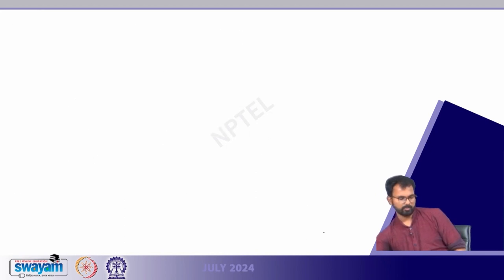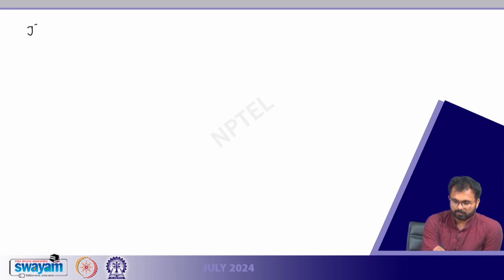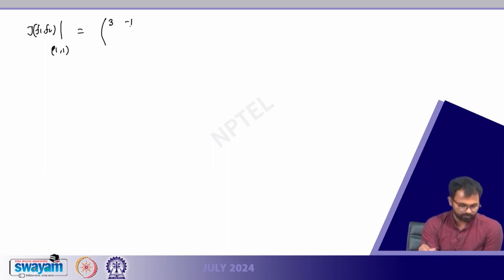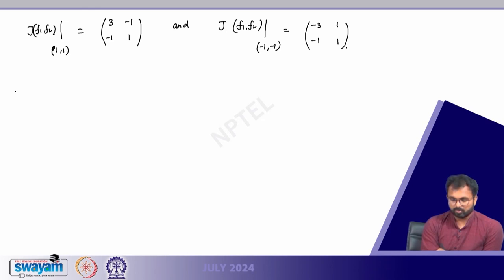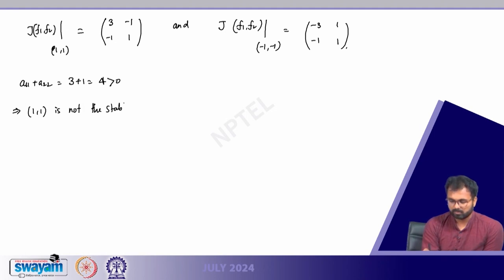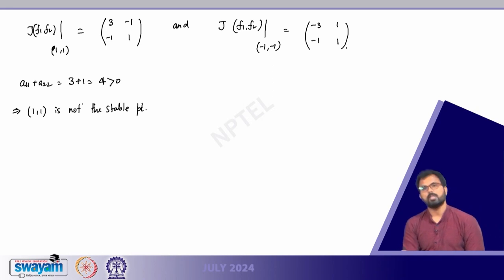For the point (1, 1): the trace a11 + a22 = 3 + 1 = 4, which is positive. This implies (1, 1) is not a stable point because the trace is positive. For the point (−1, −1): a11 + a22 = −3 + 1 = −2, which is less than 0.